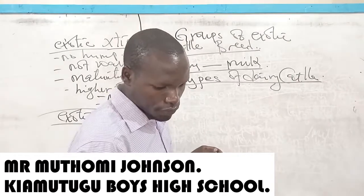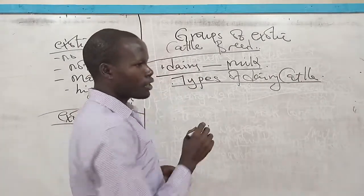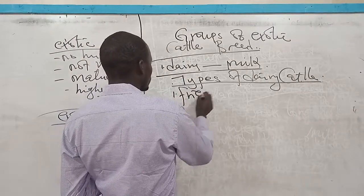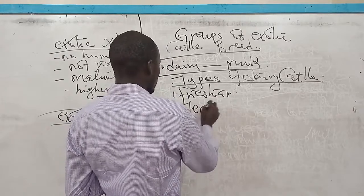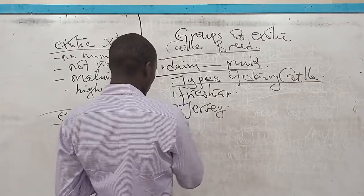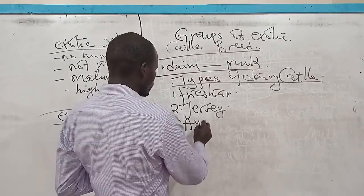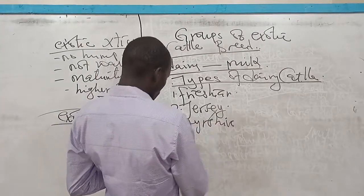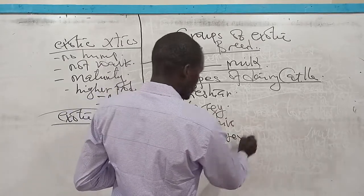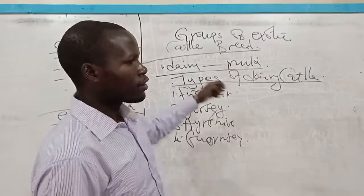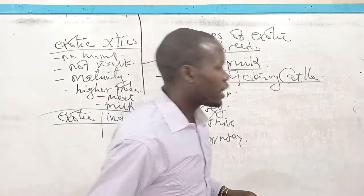There are five categories, we have five, but we shall look at the major four. One, we have Friesian. We have the Friesian, and the Jersey, number three. We have the Ayrshire, and also the fourth one, we have the Guernsey. These are the four major categories of the dairy cattle which we are going to look at.